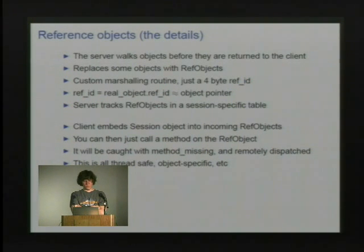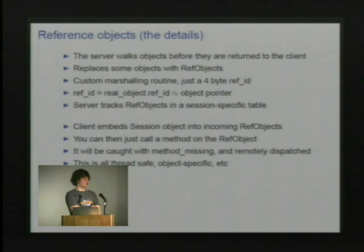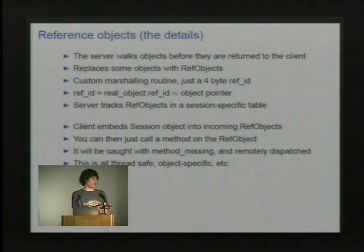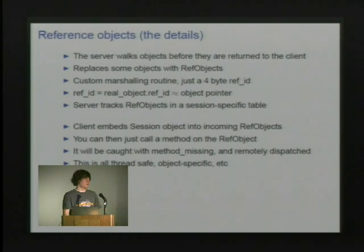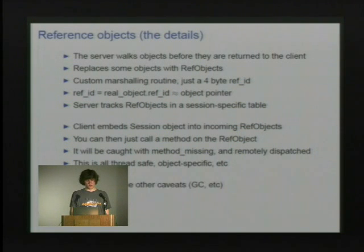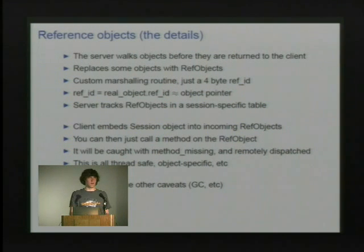When the client gets back any reference object from the server, it attaches a session to it — basically a channel like a TCP socket to contact the server. You end up with a reference object that has a member variable that's the TCP socket, so you can call methods on the object and it knows how to go talk to the server. Calls are caught with method_missing and remotely dispatched. Because the session object is tied to specific reference objects, you can have multiple connections to different IDA servers. There are some issues with garbage collection — the server has no way of knowing what objects the client is referencing, so it leaks memory until you disconnect and then it frees everything.